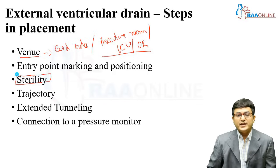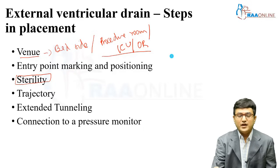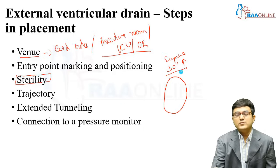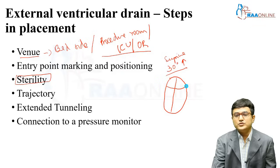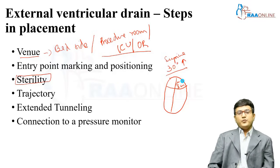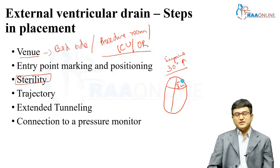Entry point marking and positioning are important. The patient is placed supine with 30-degree head elevation. The entry point is Kocher's point — one centimeter anterior to the coronal suture and three centimeters lateral to the midline. The midline is marked first and the coronal suture is palpated. The entry point and trajectory will be further explained with the help of a video in the upcoming slides.